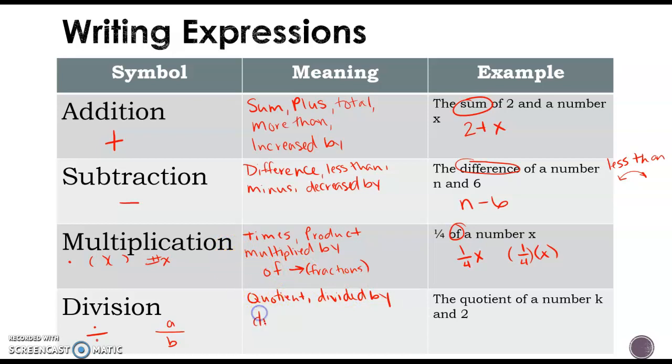And divided into, and there's probably more that you can think of, like halved or third or something like that. All right, the quote for our example, the quotient of a number k and 2. Remember, this also matters on our order. So k divided by 2, or k divided by 2, or k halves. All right, so those are some examples.